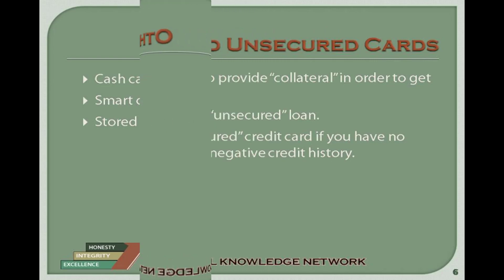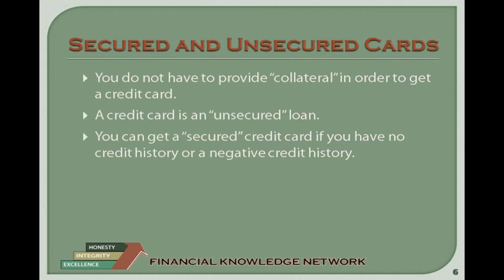It is important to understand the difference between secured and unsecured credit as it relates to credit cards. Unsecured credit is any credit that does not require collateral — assets used to secure a loan. Credit cards are unsecured credit, so collateral is not required. However, in cases where you have damaged credit, secured credit cards are available. These cards require you to prepay an amount, which is then made available for purchases. This type of credit is helpful when rebuilding a credit score after a severe financial crisis such as bankruptcy. Once a history of prompt payment is established, the user can then acquire unsecured credit.